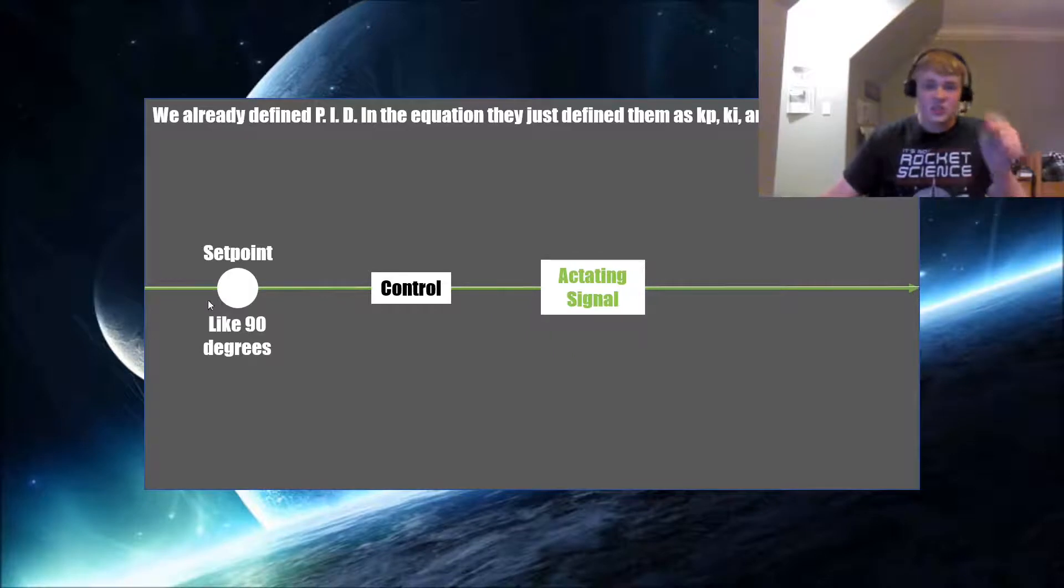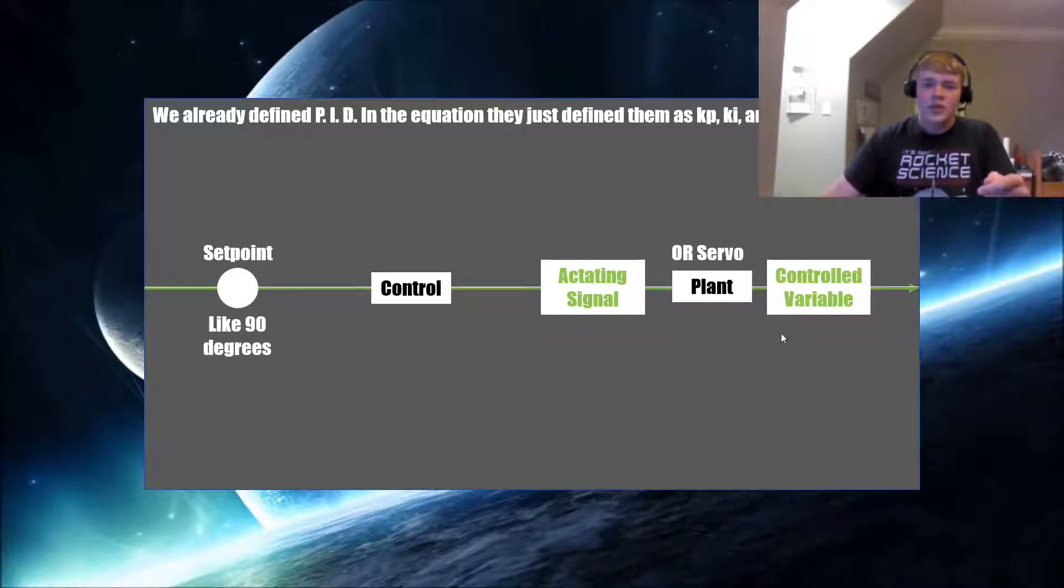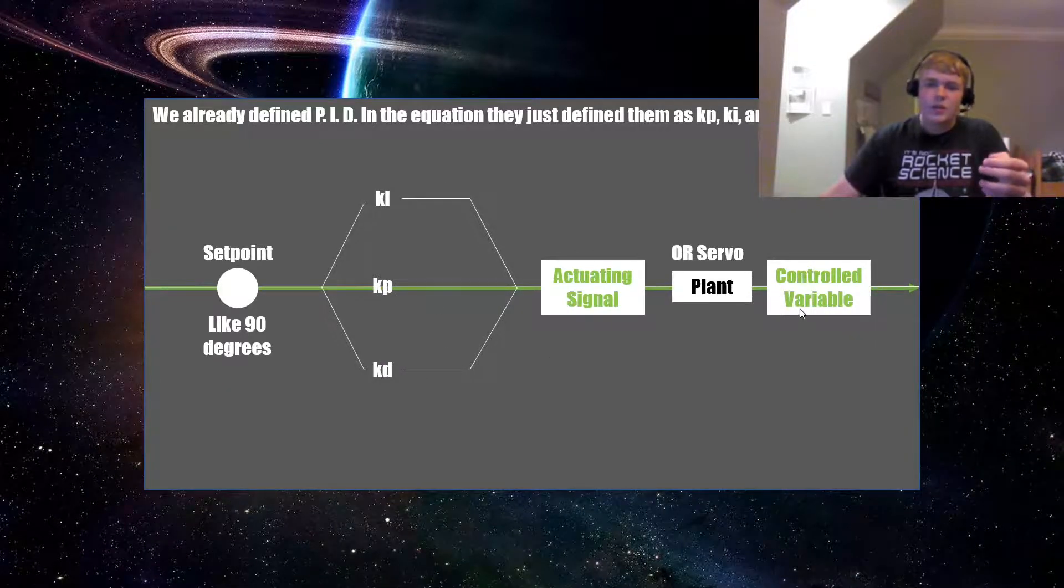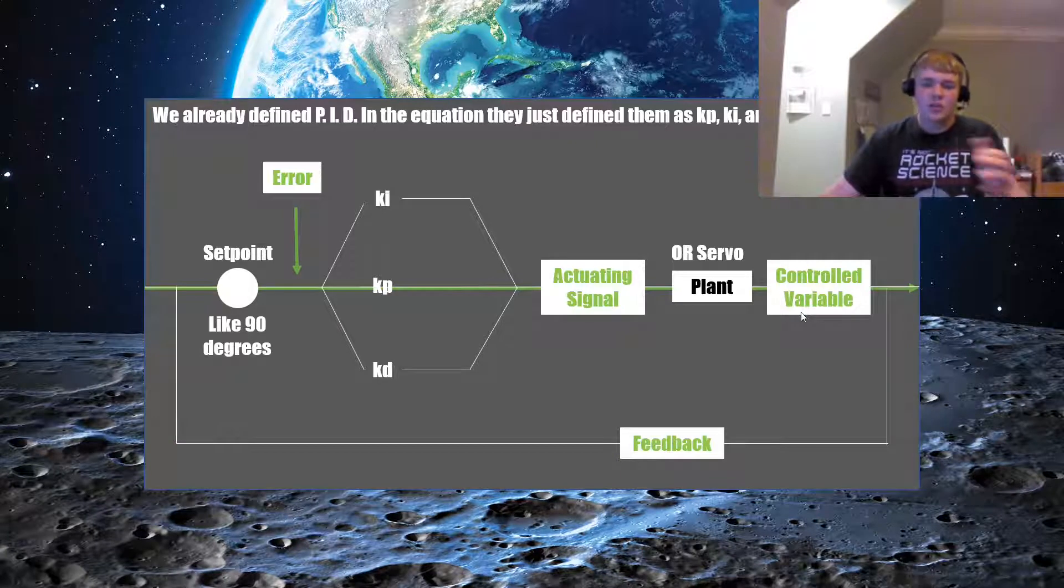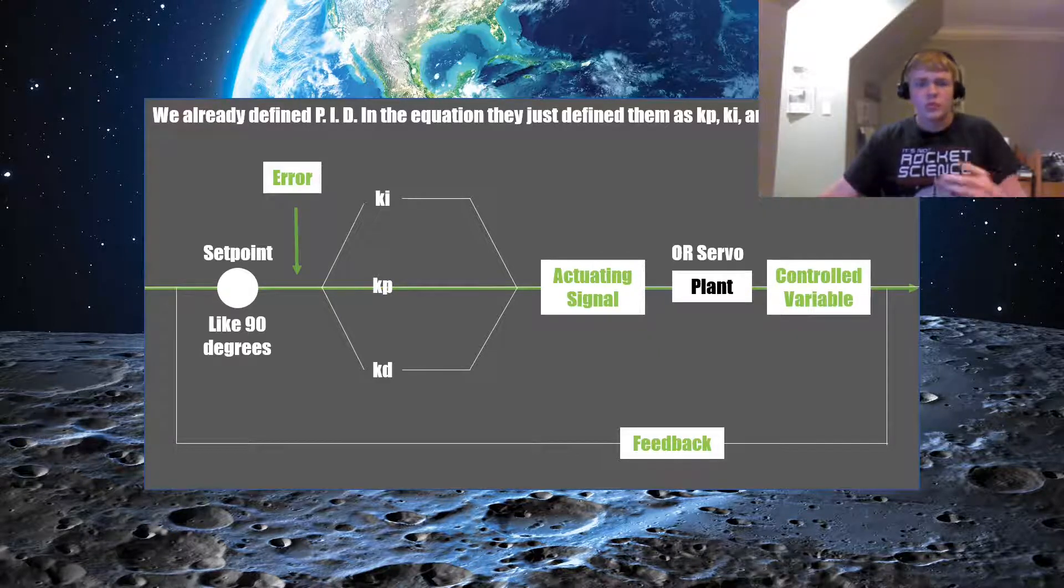Next is our actuating signal. So, it's actually taking the data points, it is calculating through the control, and creating an actuating signal, something that is controlling something. In this circumstance, a technical term for it is the plant, but it's actually our servo in this instant. And what that is creating is it's creating a controlled variable. That controlled variable will then, once it runs through the K, I, P, I, D, will be fed back in the feedback loop to the set point and be compared.